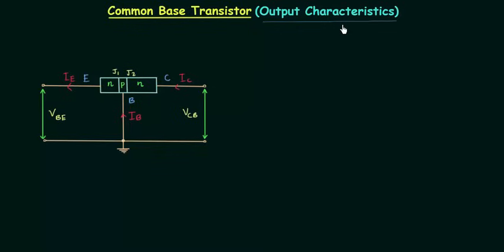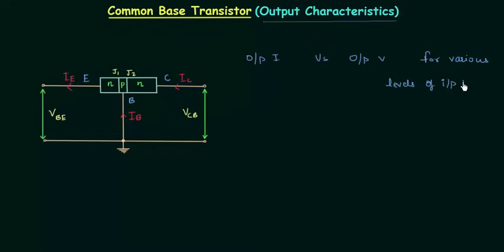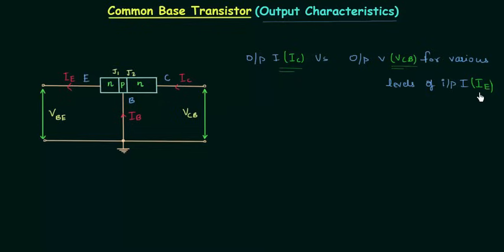The output characteristics is the graphical relation between the output current and the output voltage for various levels of input current. In the common base configuration, IC is the output current, VCB is the output voltage, and IE is the input current. So we have to plot IC versus VCB for various levels of emitter current IE.